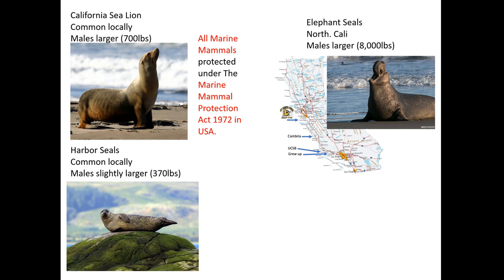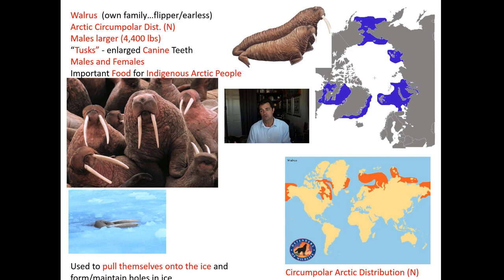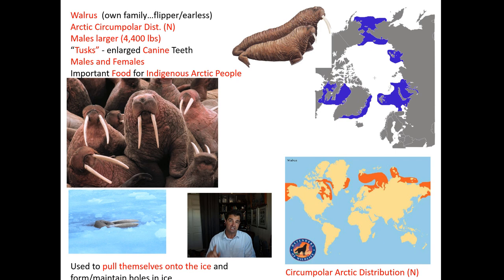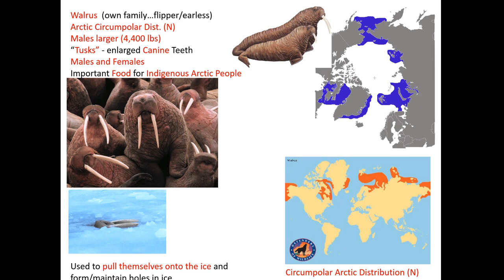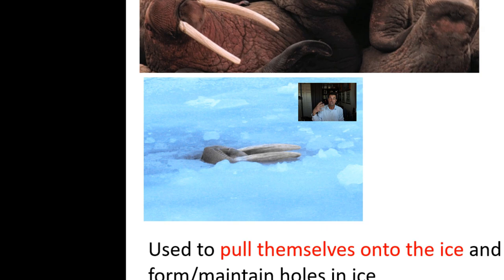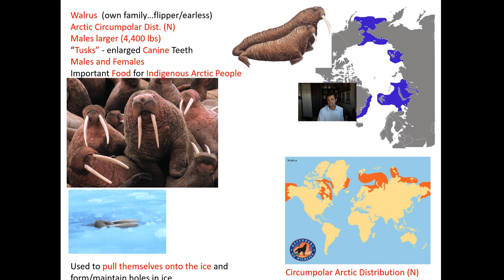The walrus is a little unusual — it's in its own family. It has flippers it can rotate like a sea lion, but is earless like a seal, so it's placed in its own group. Males can weigh up to 4,400 pounds. Walruses have tusks — one of their most characteristic features — present in both males and females. The tusk is a modified canine tooth used for defense and to grab onto ice. Walruses historically have been an important food source for indigenous Arctic peoples.